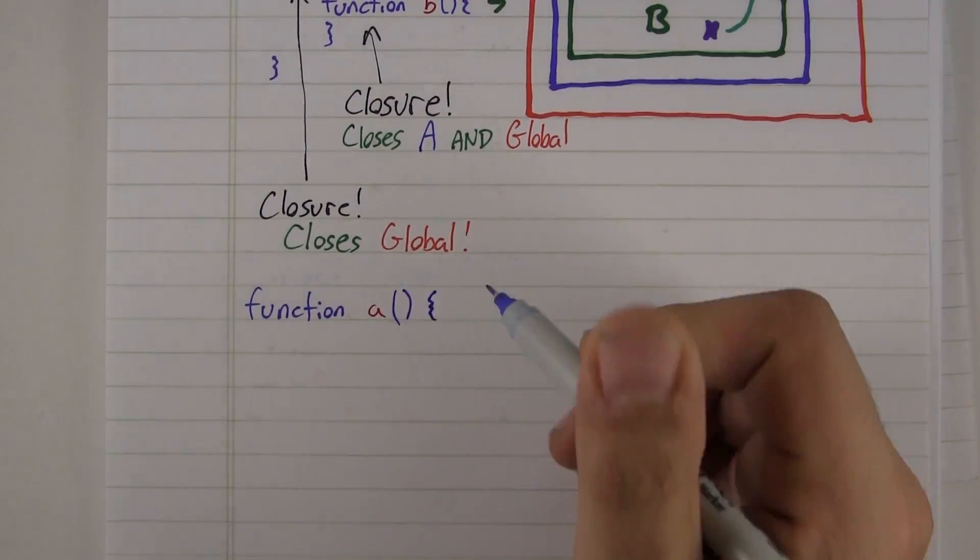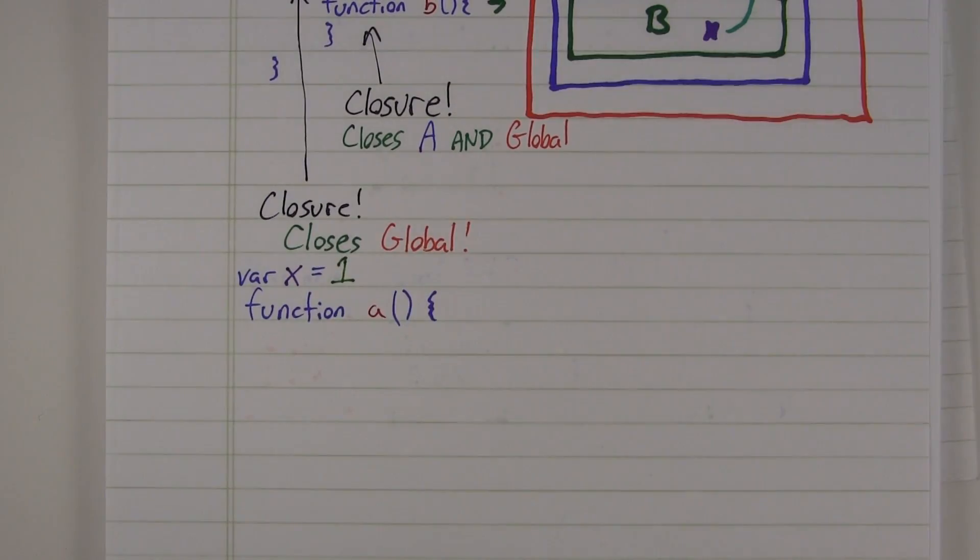So to close out, let's look at a piece of code and track the variables through it.